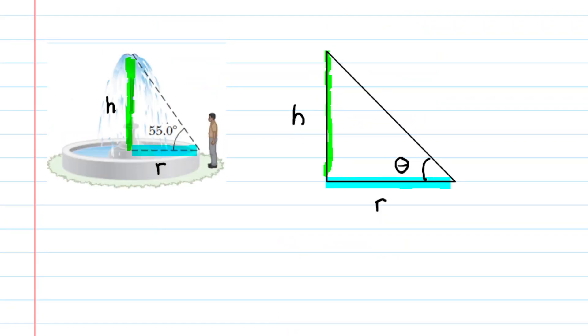We look back at the original figure, we can see that it forms a right triangle. We've marked the height h, and that radius again is r, and then we have an angle of 55 degrees. Now we've kind of translated that original picture into a more basic looking triangle.